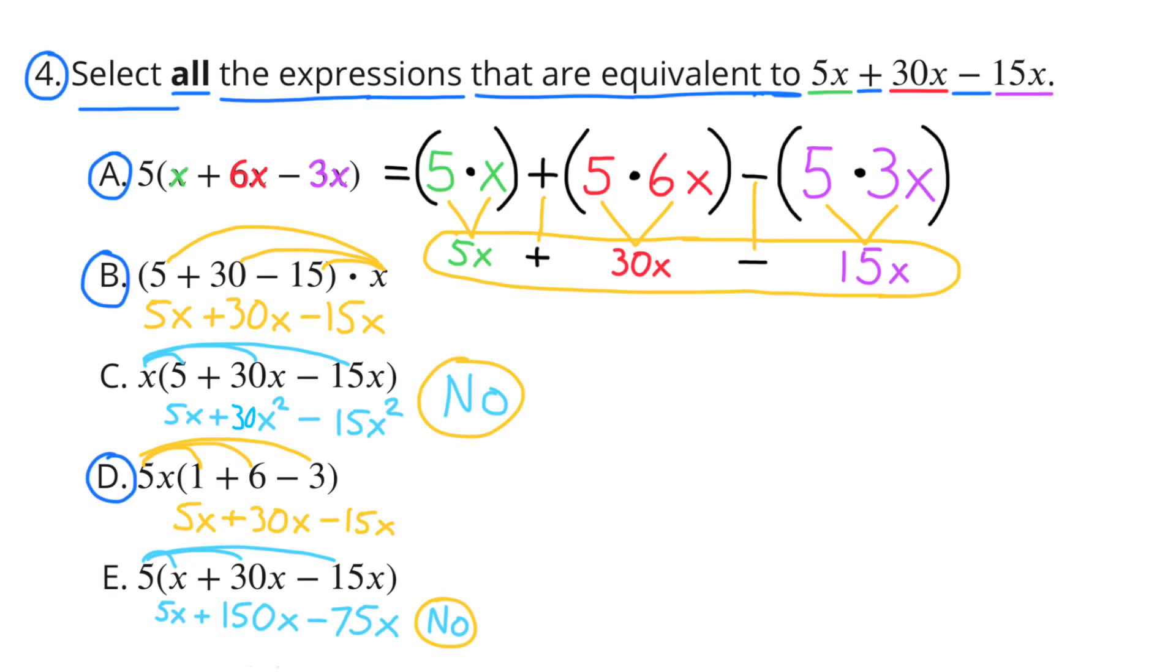Let's look at C. X times 5 plus 30x minus 15x. X times 5 is the same as 5x. X times 30x is the same as 30x squared. So, that's not going to be equivalent. Let's look at D. 5x times 1 plus 6 minus 3. 5x times 1 is 5x, plus 5x times 6, that's 30x, minus 5x times 3, that's 15x. So, that's also equivalent.